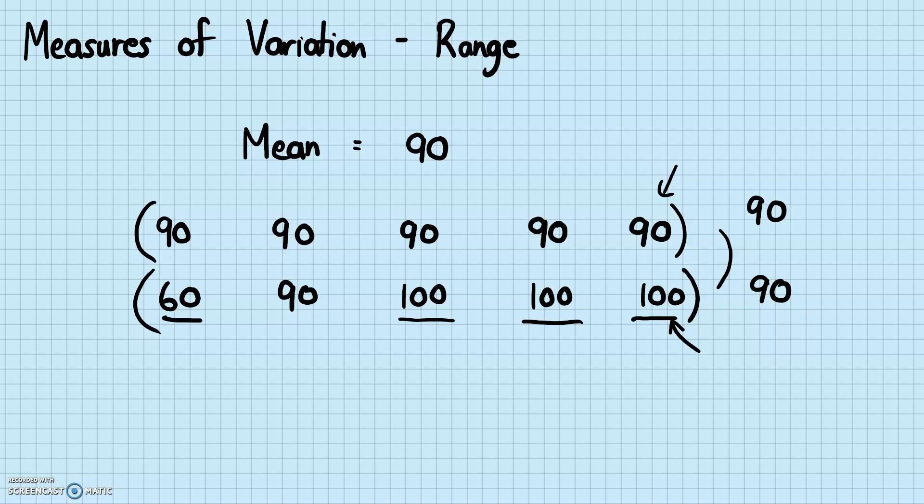So the mean just by itself is not a very good reflection on the data set. And that's why we also use measures of variation in addition to measures of center. So by the word variation, you can tell that it's measuring how different the data is within the data set.